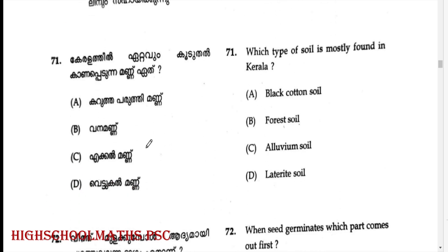Which type of soil is mostly found in Kerala? Answer: Option D — Laterite soil (Vettukal manna).